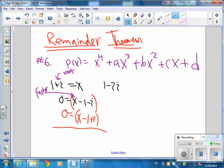This is the root 1 minus 2i. Can you tell me what the factor is? The factor is 0 equals x minus 1 plus 2i. What will the conjugate factor be? x minus 1 minus 2i.